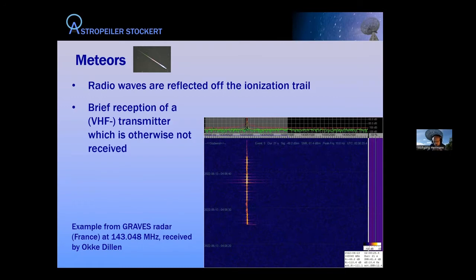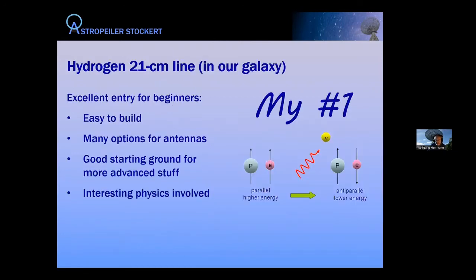Now I switch to what I think is very interesting and fairly easy low-hanging fruit for amateur radio astronomy: hydrogen emission, the 21-centimeter line. I call this my number one for everybody who wants to enter radio astronomy — and it can keep you busy for a long, long time. Why is it good for beginners? It's fairly easy to build, there are tremendous antenna options, and it's a very good starting point. You can learn a lot of things by observing hydrogen and it has a lot of interesting physics involved.